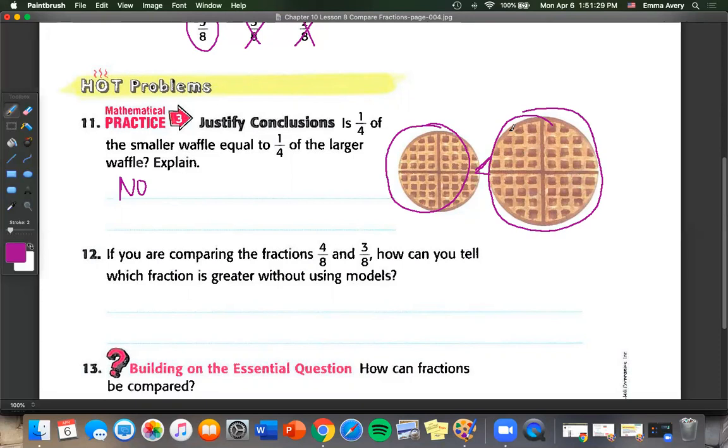Number twelve. If you are comparing the fractions four eighths and three eighths, how can you tell which fraction is greater without using models? Well, we have the same denominator. So we can kind of pretend like the denominators aren't there. Which is greater? Four or three? We know four is greater than three. So four eighths is greater than three eighths.